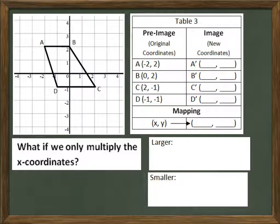So now, what if we only multiplied the x-coordinates? Well, that would be a mapping that looks like x changing to 2x, but y remains the same. So it's 2x, y.